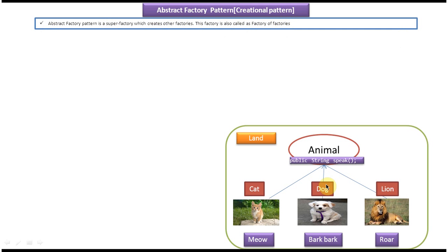To understand this explanation I have created one example. Here you can see cat, dog, and lion. This cat class, dog class, and lion class are the subclasses of the animal super interface or animal super class. This animal super interface has one method called public string speak(). Cat implements speak() and returns meow, dog implements speak() and returns bark bark, and lion implements speak() and returns roar.